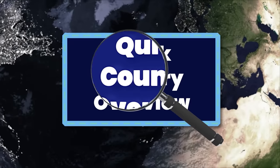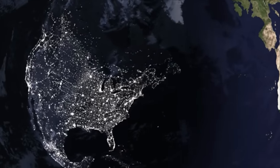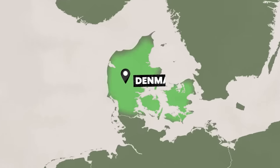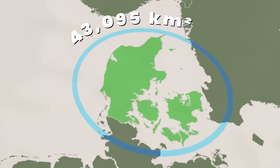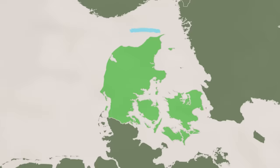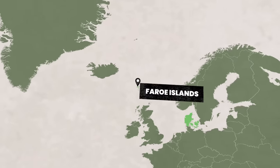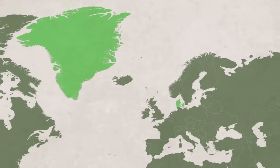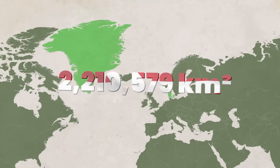We're starting off with a segment we'd like to call Quick Country Overview. Denmark is attached directly to the continent of Europe, where it's one of the smaller countries with an area of 43,095 kilometers squared. However, the Kingdom of Denmark also includes the Faroe Islands as well as the island of Greenland, bumping the area up to a significantly larger size of 2,210,579 kilometers squared.